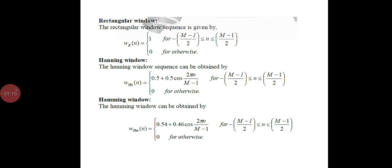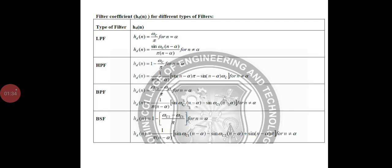Hanning window can be obtained as 0.5 + 0.5*cos(2πn/(m-1)) for -(m-1)/2 to (m-1)/2. And hanning window equals 0 for |n| > (m-1)/2.